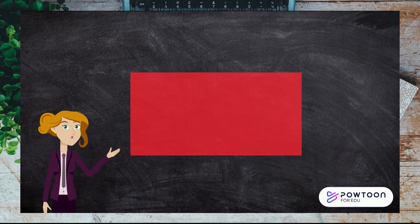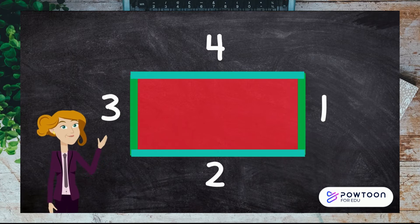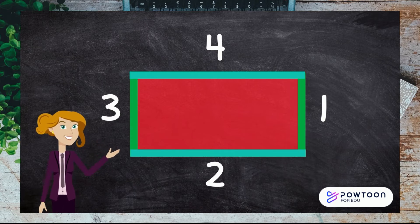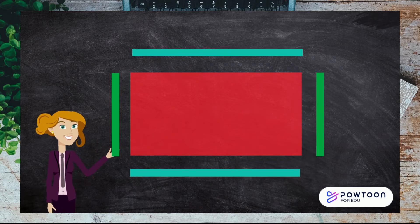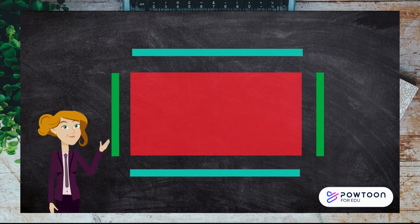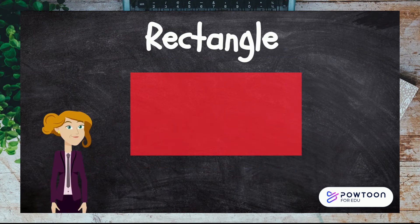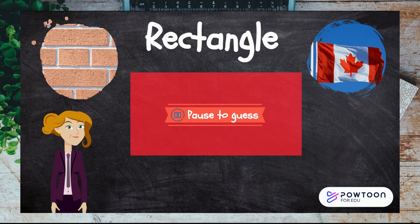Let's squash this square. Now the sides are not the same length. It has two long sides and two short sides. Yes, it's a rectangle. Can you make a rectangle with your fingers? Two short thumbs and two long fingers. What else is a rectangle?